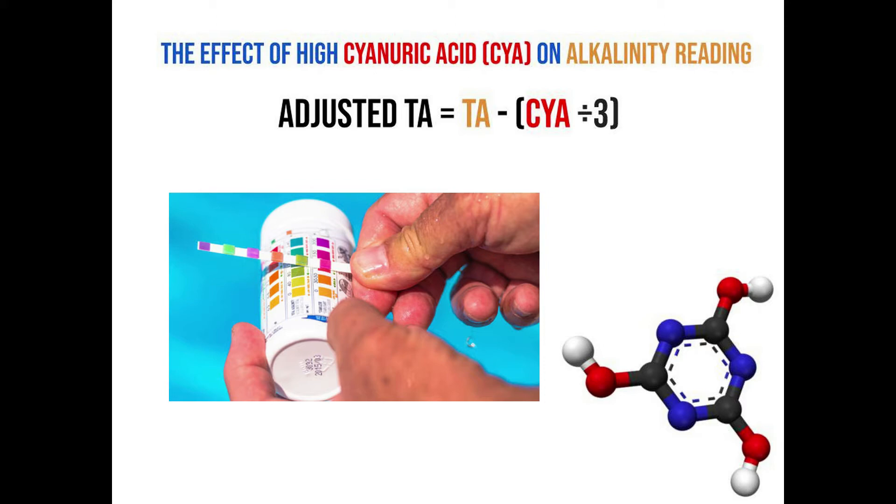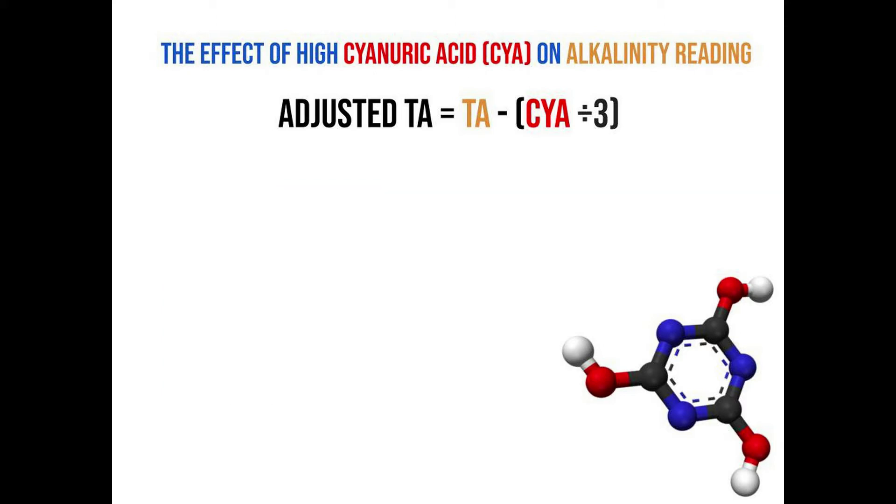So the true alkalinity reading you test on your test kit is not going to be your true alkalinity reading. You'll have to do an adjustment using the calculation with the formula below. Adjusted total alkalinity will equal your total alkalinity minus your cyanuric acid divided by three.